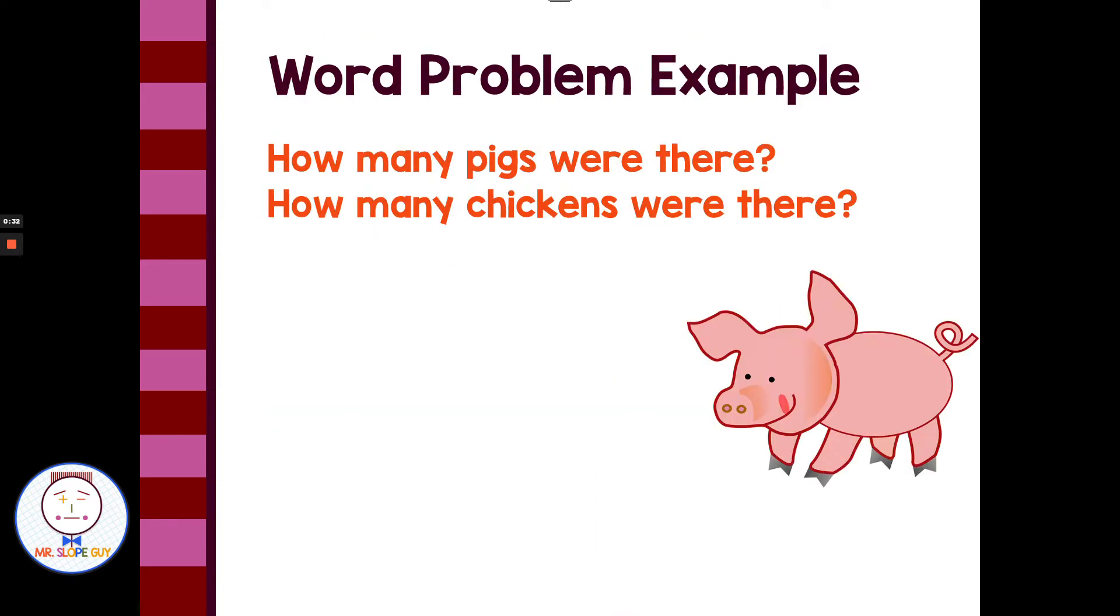How many pigs were there and how many chickens were there? So we're writing a system of equation word problem. We can use two variables. We just have to write two equations to be able to solve with two variables. So the first thing we're going to want to do is identify our two variables.